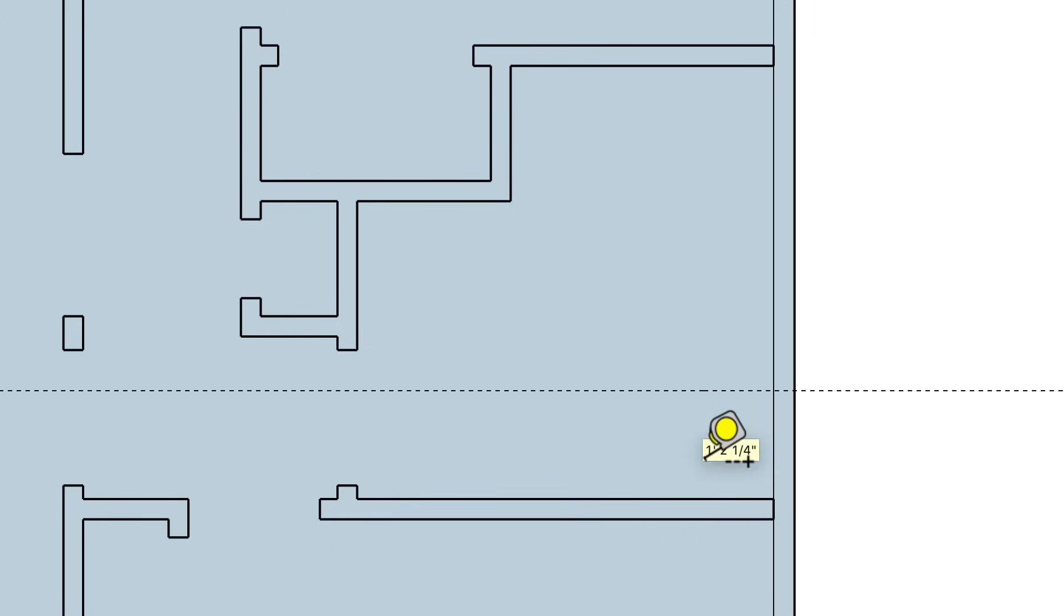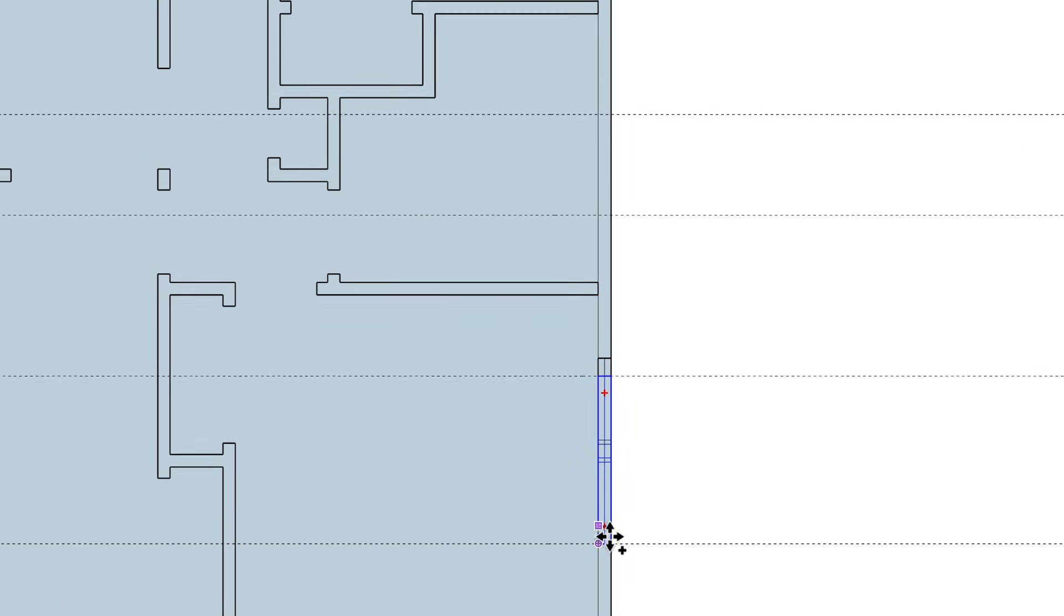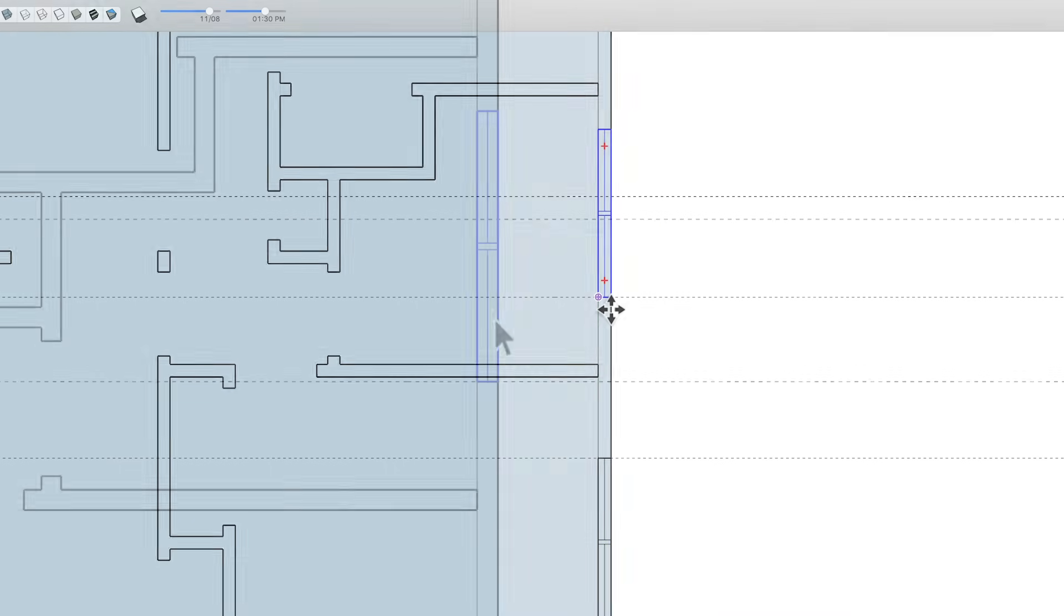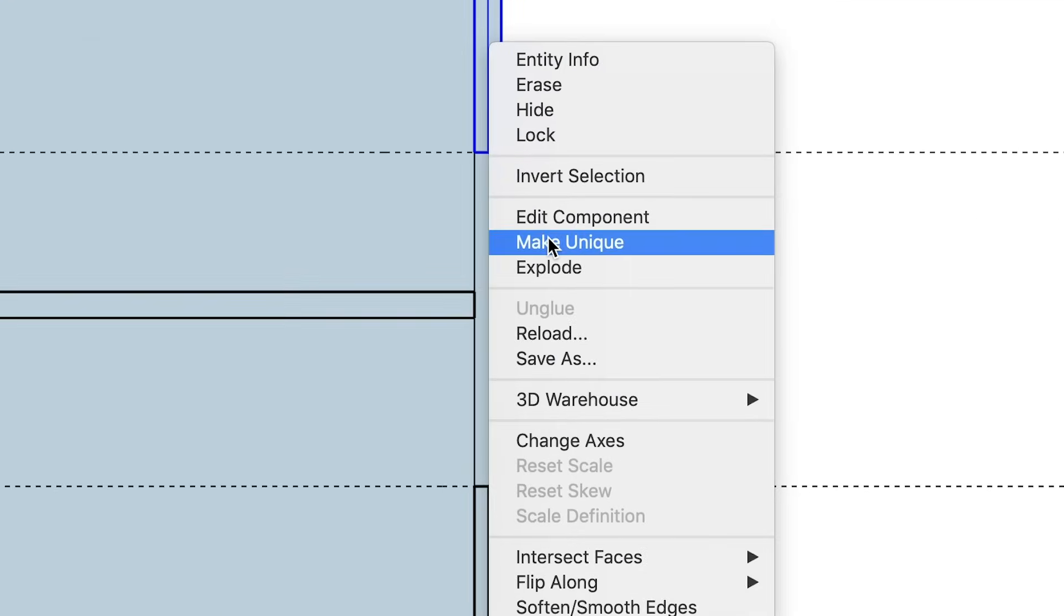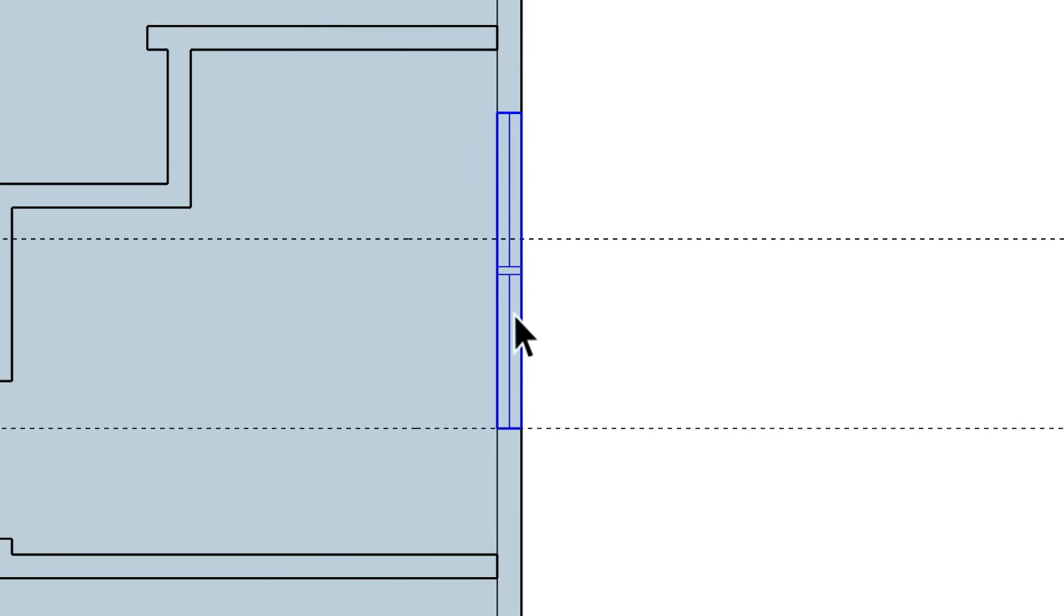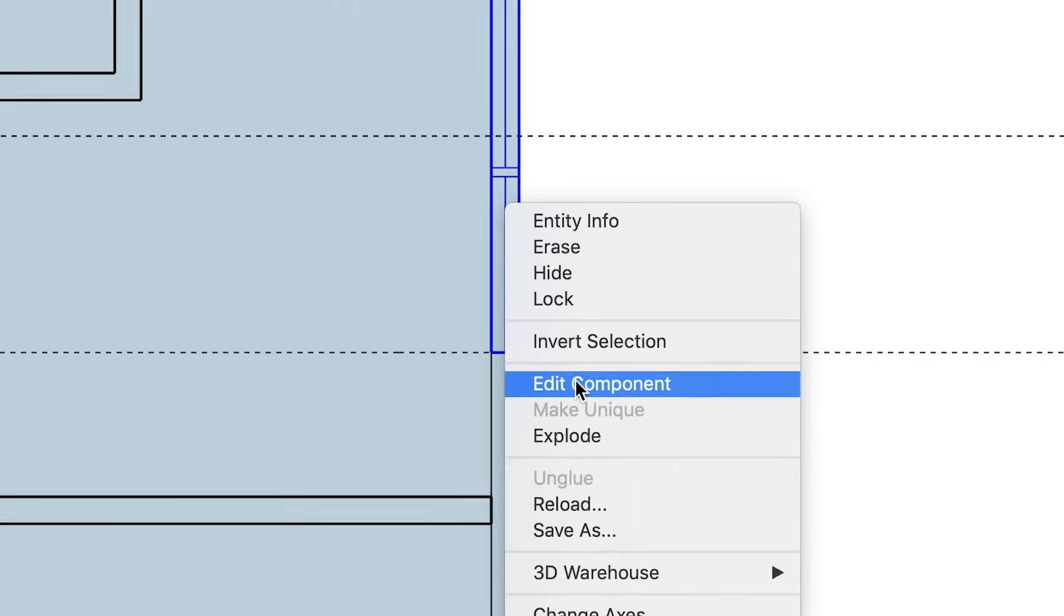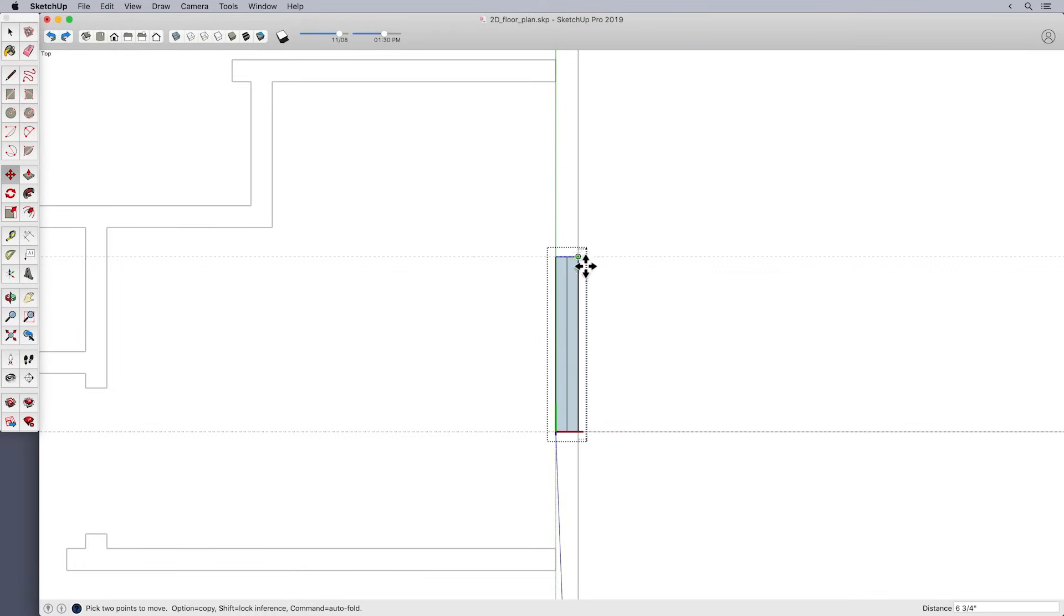But what about the case where you have another window that's not the same size? Of course, you could create a new component from scratch that's the correct size. And in some cases, that might be your best bet. But it's also worth pointing out that you can modify your existing component to fit. Here's how. Start by using the Tape Measure to set up guidelines for the new window. Follow the steps from before to move another copy of the window component. Then right-click on the component and select the option for Make Unique. Then right-click on the component, select the option for Edit Component, and modify the component to fit.